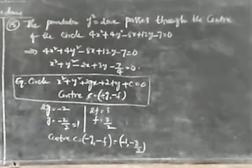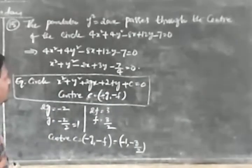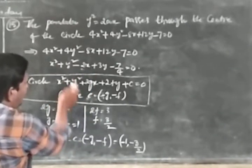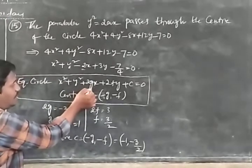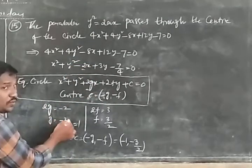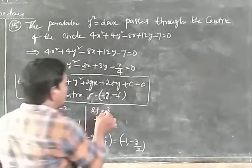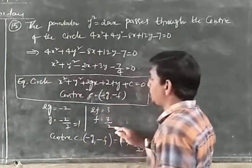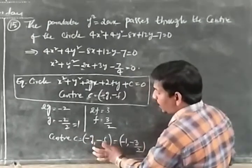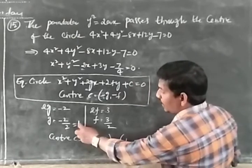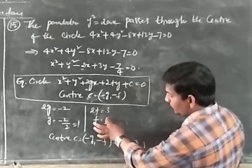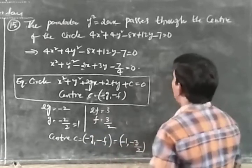From 2g = −2, g = −2/2 = −1, so −g = 1. And 2f = 3, f = 3/2, so −f = −3/2. Therefore the center is (1, −3/2).